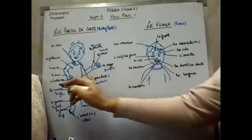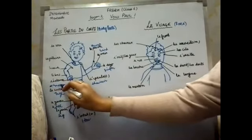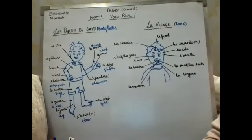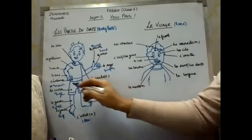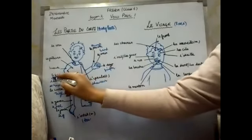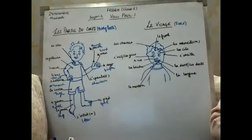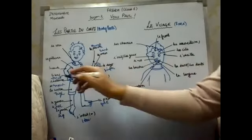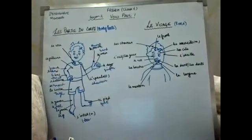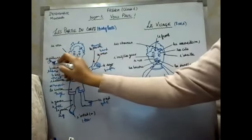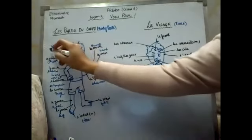La cuisse means thigh. L'estomac is stomach. Next, le bras means wrist. Le coude means elbow. La poitrine means chest. And the last, le cou means neck.